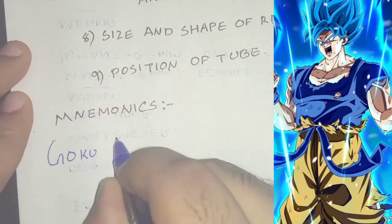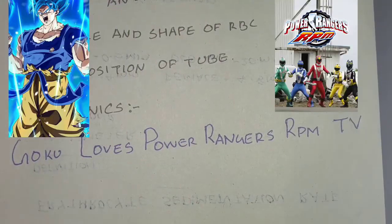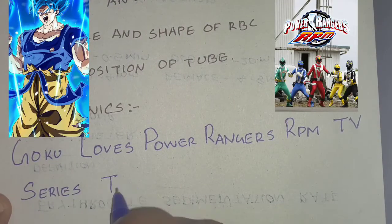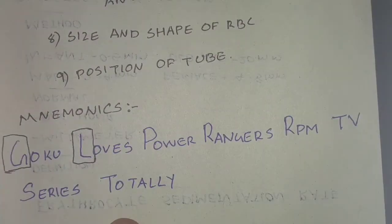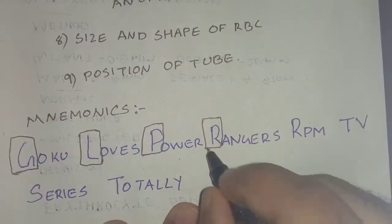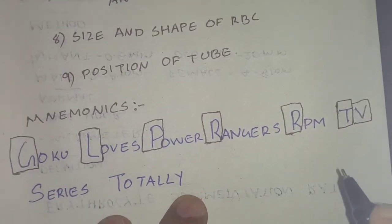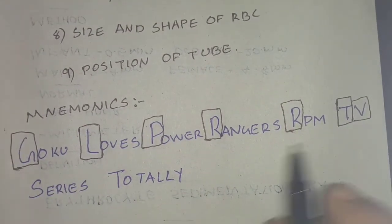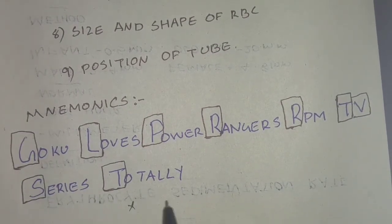Here is a mnemonic to memorize the factors — Goku loves Power Rangers RPM TV CDS totally: G for specific gravity, L for plasma lipid, P for plasma protein, R for rouleux formation, R for RBC count, T for temperature, V for viscosity, S for size and shape of the RBC, and T for position of the tube.